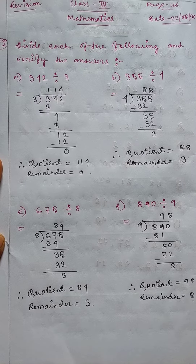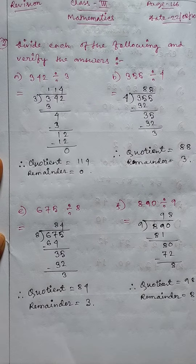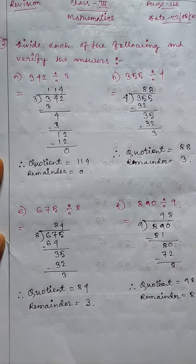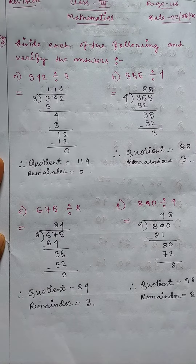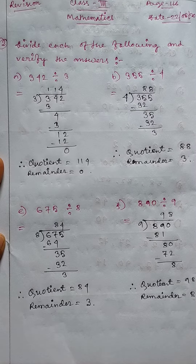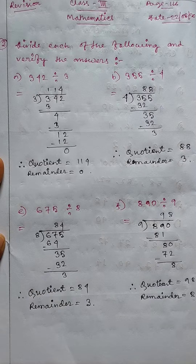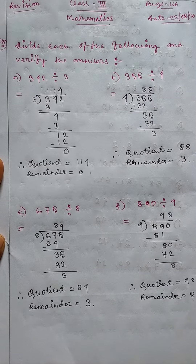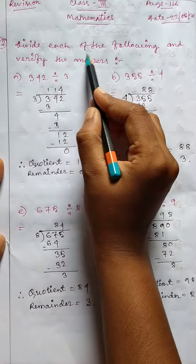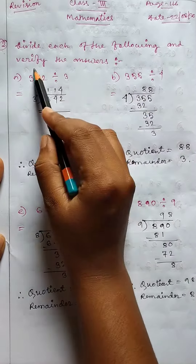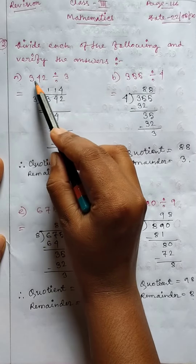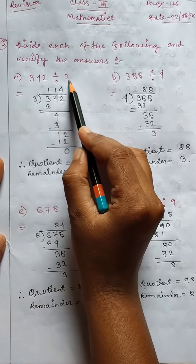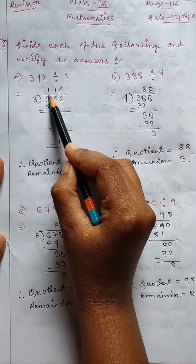Hello students, good morning. Class 3 Mathematics, date 22nd of August 2020, page 116, revision class. Let's start. Question 2: divide each of the following and verify the answers. Firstly, (a) 342 divide by 3 equals 114 — quotient 114, remainder 0.